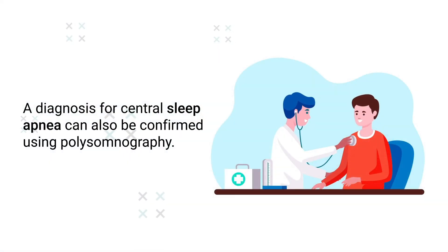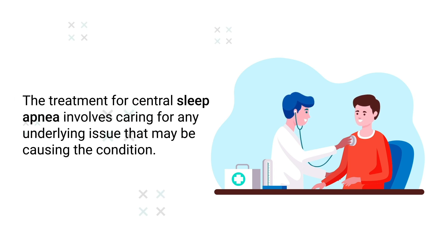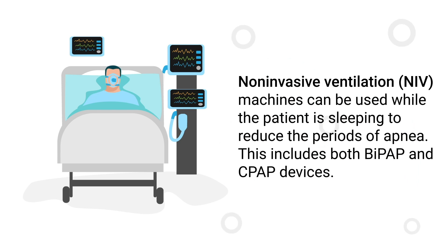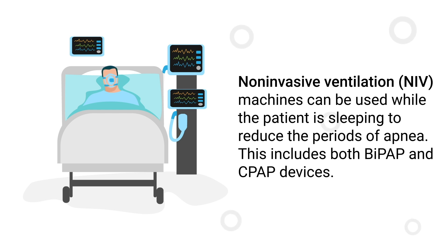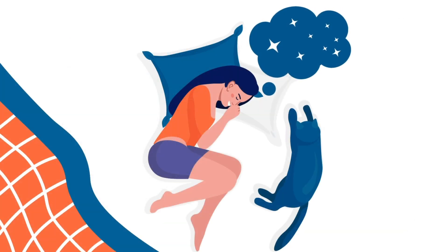A diagnosis for central sleep apnea can also be confirmed using polysomnography. The treatment involves caring for any underlying issue that may be causing the condition. Non-invasive ventilation machines, including both BiPAP and CPAP devices, can be used while the patient is sleeping to reduce periods of apnea, and supplemental oxygen may also be indicated.